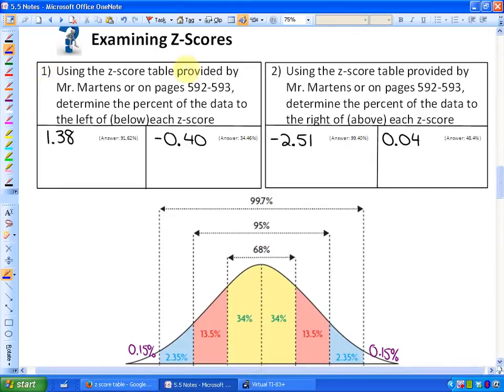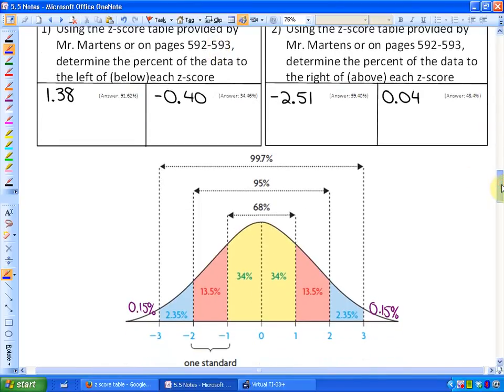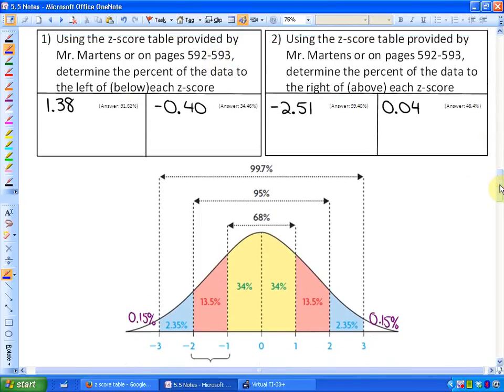Number one says, using a Z-score table provided by me or on pages 592 and 593, determine the percent of data to the left or below each Z-score. Let me just show you how we could actually estimate. I'm going to estimate in all cases all of these questions first. So if I had a Z-score of 1.38, so roughly here, I would have approximately, if I was to figure all this out, all this highlighted yellow would be below me. So that would be, well up to here is 50%.